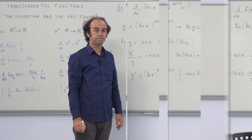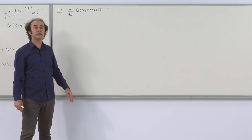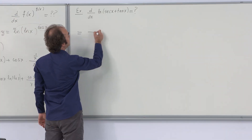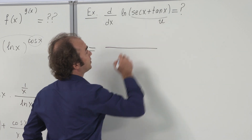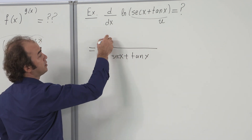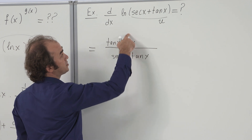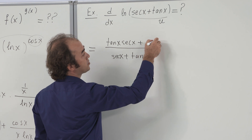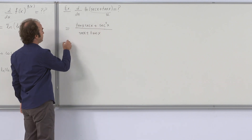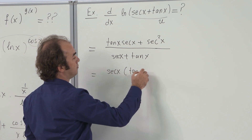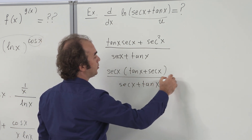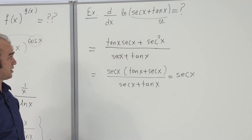Coming up, a few more examples on logarithms and exponentials. Starting with a simple one: the derivative of ln(sec x + tan x). If I call the argument u, its derivative is u'/u — I put u in the denominator and the derivative of the argument upstairs: sec(x)tan(x) plus sec²(x). There is a common factor of sec(x) in the numerator, which cancels, giving the simple result sec(x).